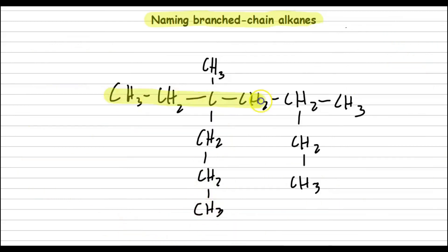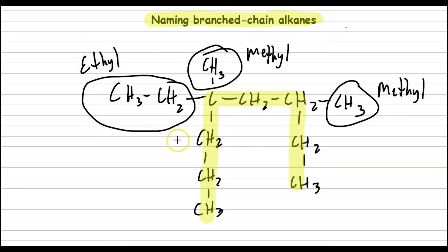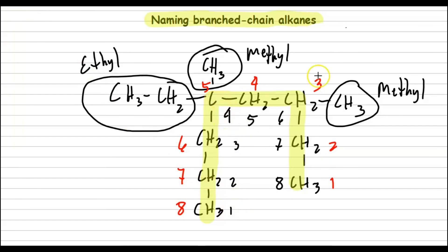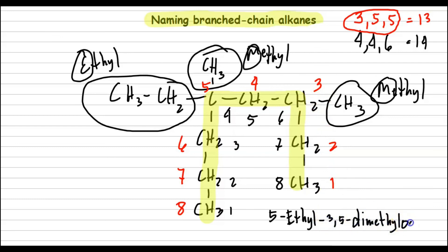One more example. The longest chain gives 8 carbons — so that is octane. The substituents are ethyl and two methyls. From left to right we get 4, 4, and 6; from right to left we get 3, 5, and 5. Adding these: 14 versus 13 — so we choose right to left. Writing ethyl before methyl (alphabetical order), the name of this hydrocarbon is 5-ethyl-3,5-dimethyloctane.